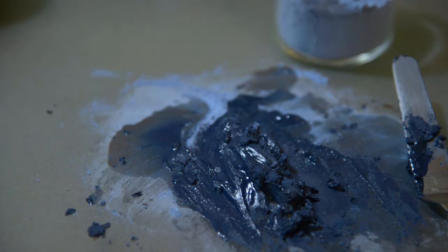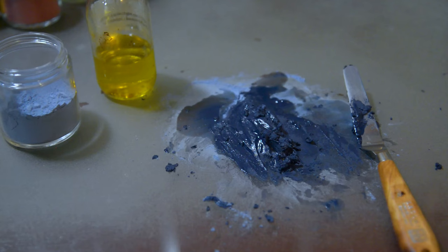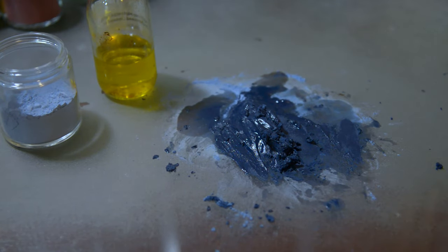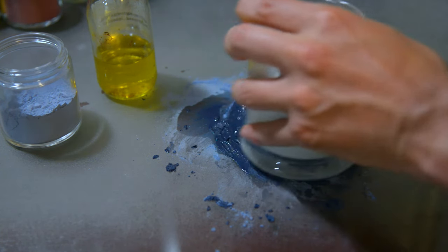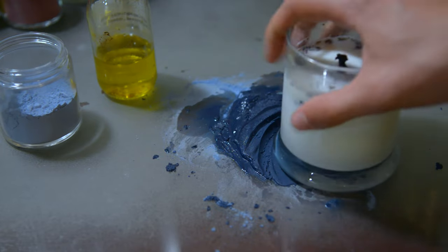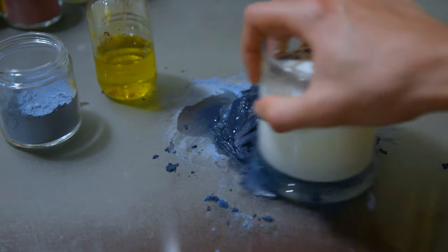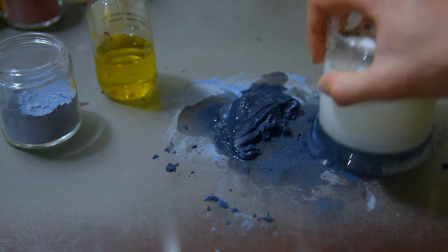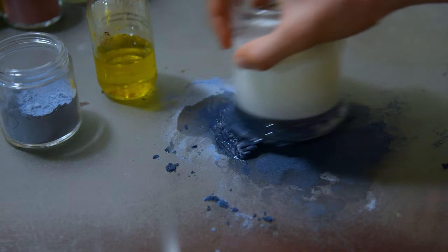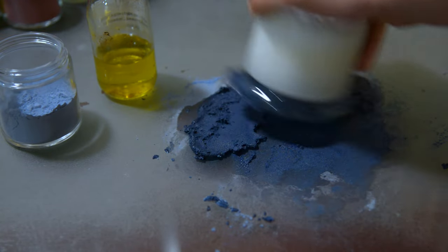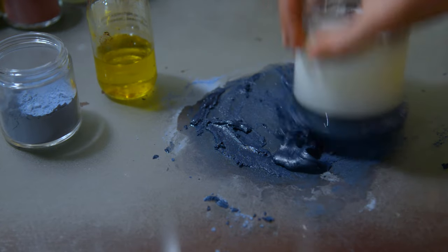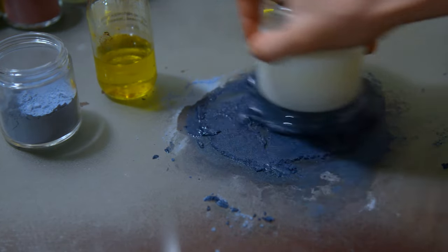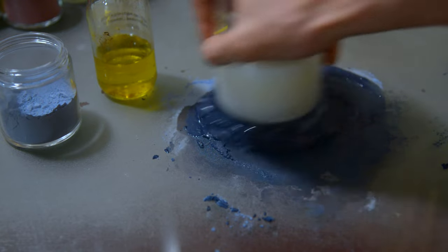I start mulling by holding the muller directly over the pile of paint and pressing down, going around in circular and figure-eight motions to further disperse the oil into the pigment. When I'm starting to mull, the paint is very thick and it doesn't give very much. It requires a lot of pressure in order to distribute and push the paint around. But as I get further along and mull it more and more, it's going to become more smooth and velvety, and that's going to be an indication that it's getting closer to being done.